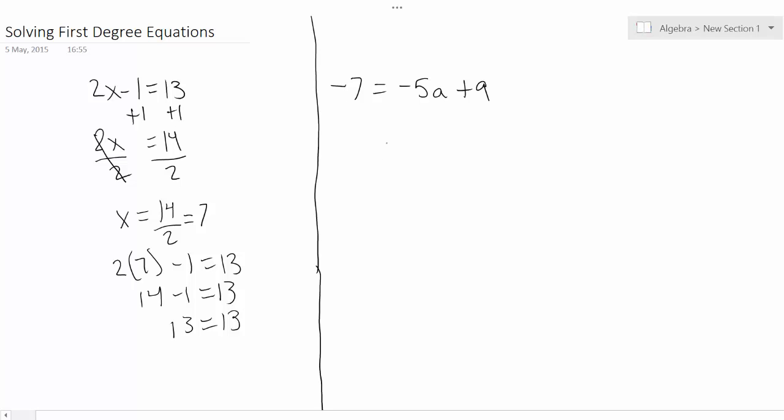Now here we have negative 7 equals negative 5a plus 9. a is your variable. So we're going to do minus 9 on both sides to get a by itself. We're going to get negative 16 equals negative 5a.